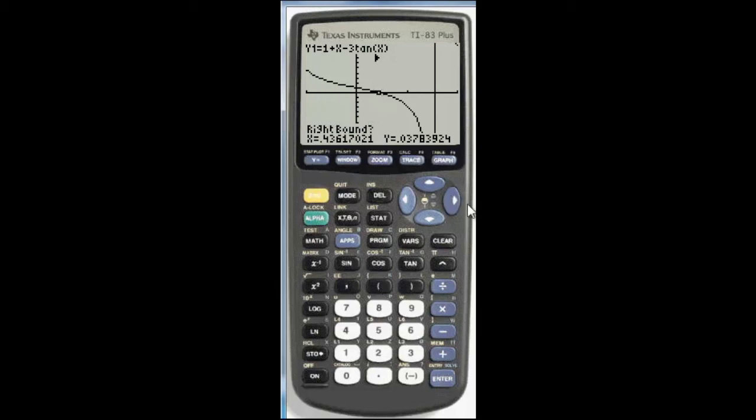And then we want our right bound to be on the other side of the x-axis. So, we want y to be negative. Again, hit enter.